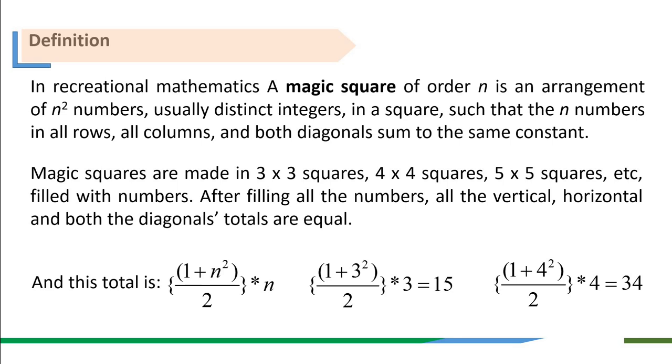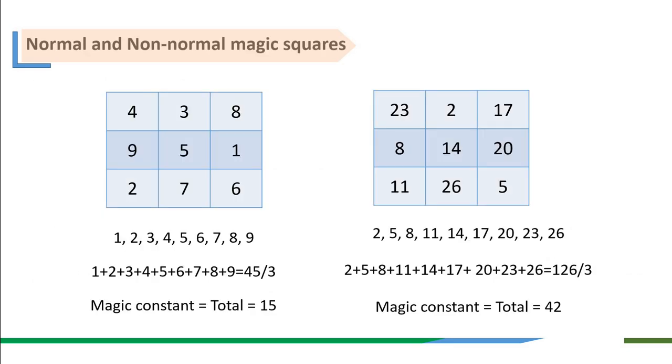If we see this formula, (1+n²)/2 × n, it gives us for a magic square of order 3×3: (1+3²)/2 × 3 = 15, or (1+4²)/2 × 4 = 34. This number 15 for 3×3 or 34 for 4×4 is the smallest number that can be a magic constant. There can be a magic constant larger than 15 for 3×3 or 34 and larger for 4×4 magic squares.